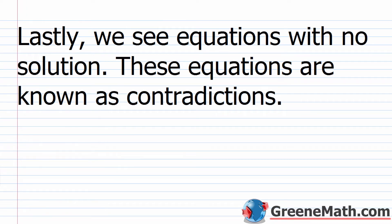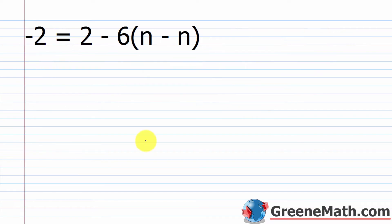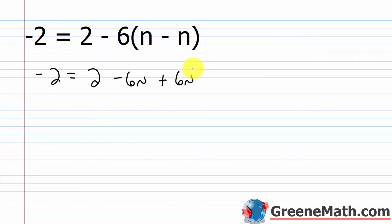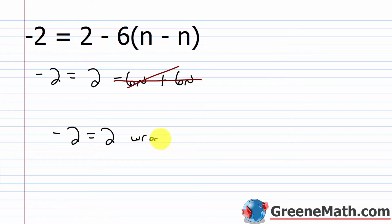Lastly, we have equations with no solution, known as contradictions. No matter what you choose for n, it's never going to work. If we simplify the right-hand side, we get negative 6n plus 6n — those are opposites and cancel out completely. We're left with the nonsensical statement negative 2 equals 2. That's wrong; negative 2 doesn't equal 2.